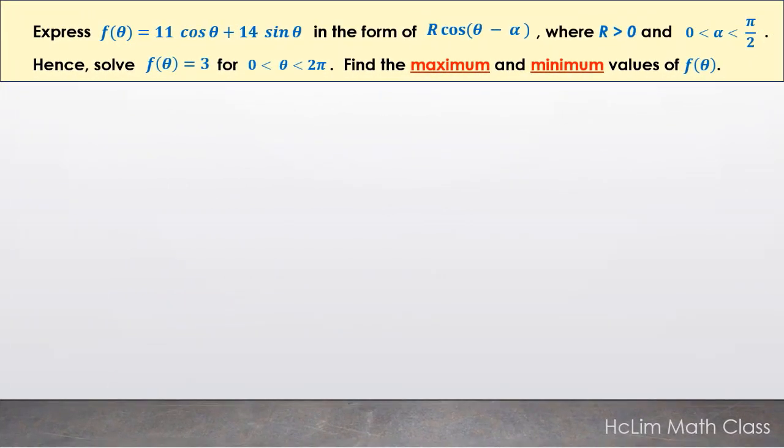Look at these examples. We are going to express f(θ) in the form R cos(θ - α) where R > 0 and α is in the first quadrant. Then we are going to solve f(θ) = 3 for 0 < θ < 2π. Finally, we are going to find the maximum and minimum values of f(θ).